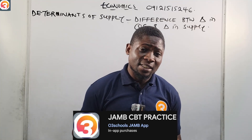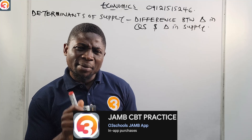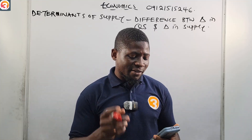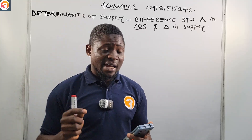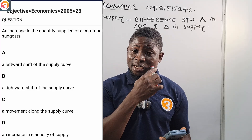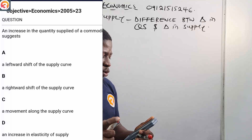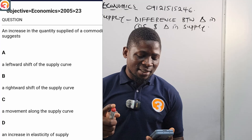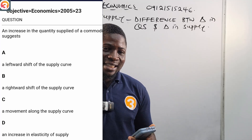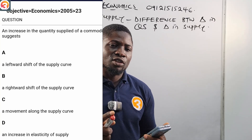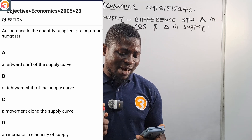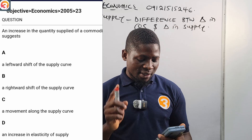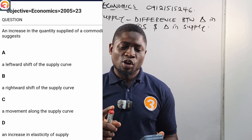This tutorial is brought to you by the O3 Schools JAMB CBT Practice App. Let's look at a JAMB past question from the app — 2005, number 23. It says: 'An increase in the quantity supplied of a commodity suggests — A: a leftward shift of the supply curve, B: a rightward shift of the supply curve, C: a movement along the supply curve, D: an increase in elasticity of supply.'